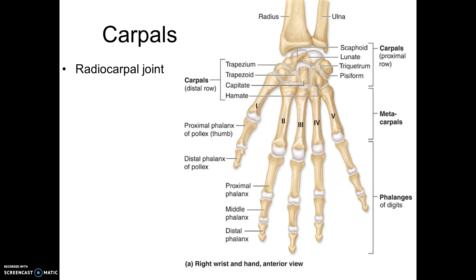The radiocarpal joint allows flexion, extension, abduction, and adduction of the wrist. Because it can flex, extend, abduct, and adduct, and it is not a saddle joint, it is classified as a synovial condylar joint. Functionally, we would classify it as a diarthrosis.